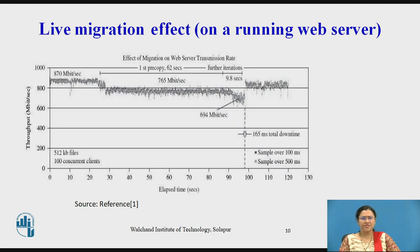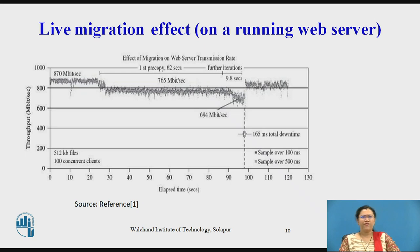The migration starts at 27 seconds into the trace, but is initially rate-limited to 100 Mbps, resulting in the server's throughput dropping to 765 Mbps. This initial low-rate pass transfers 776 MB and lasts for 62 seconds. The migration algorithm then increases its rate over several iterations and finally suspends the virtual machine after a further 9.8 seconds. In the final phase, remaining pages are transferred and the server resumes at full rate after a 165 ms outage. This demonstrates that a highly loaded server can be migrated with controlled impact on live services and short downtime.